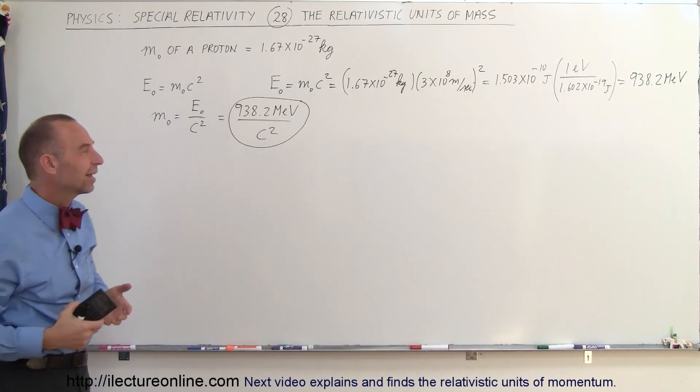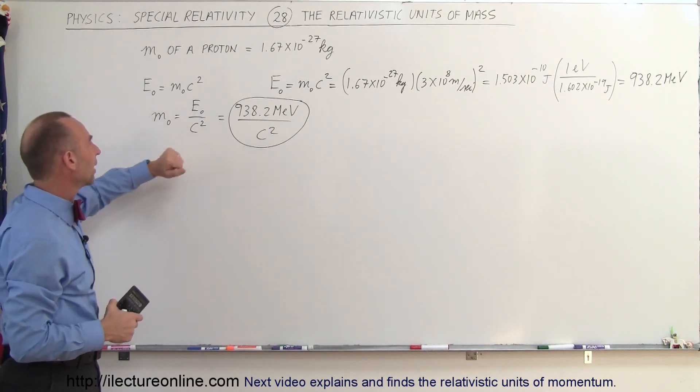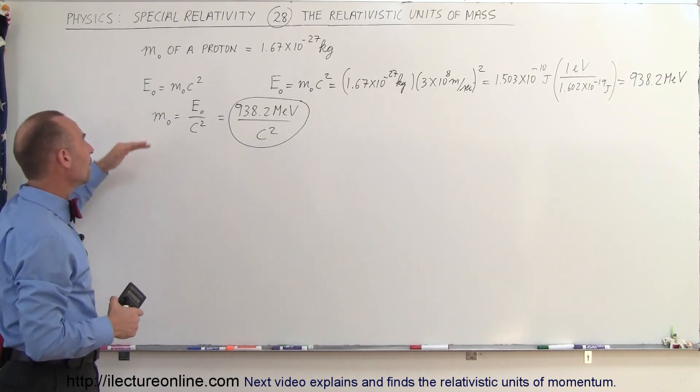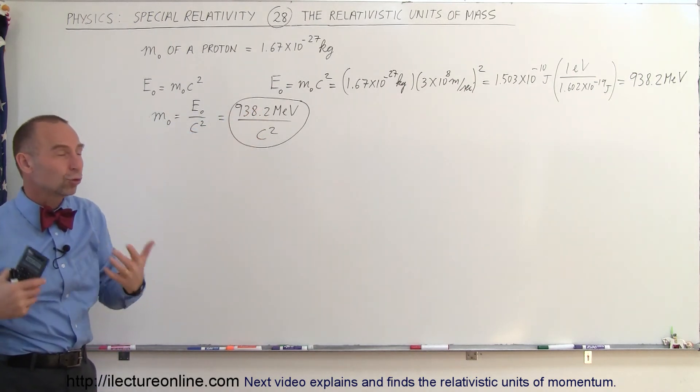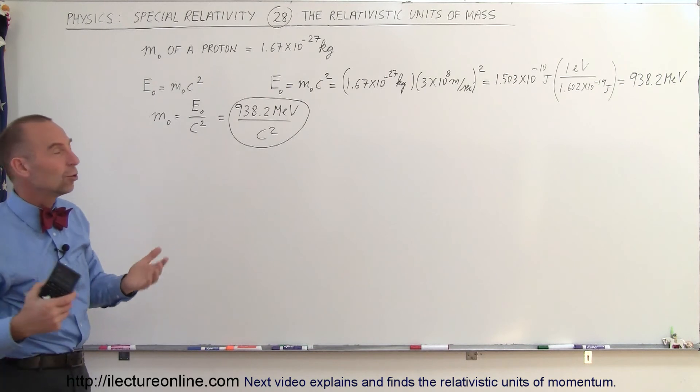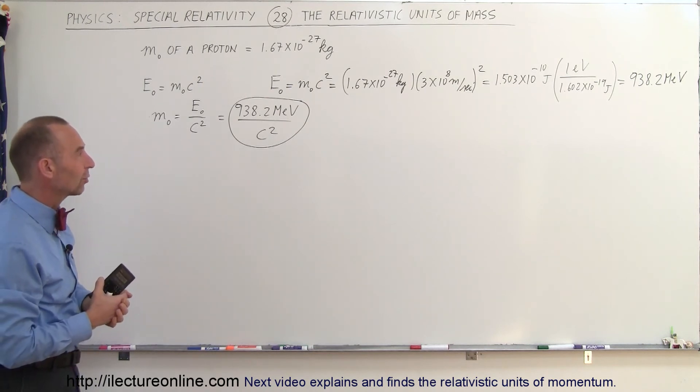That's called the rest mass energy divided by the speed of light squared. So mass is expressed in terms of energy over C squared, not in terms of kilograms like we typically would in normal physics.